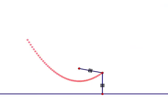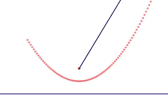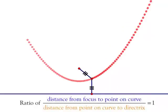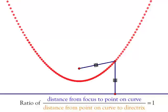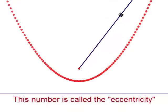So, in other words, equidistant to the directrix line, which was endpoint A, and equidistant to the focus. Now, the ratio of the distance from the focus to a point on the curve, and from the point on the curve to the directrix is 1. And this is called the eccentricity.